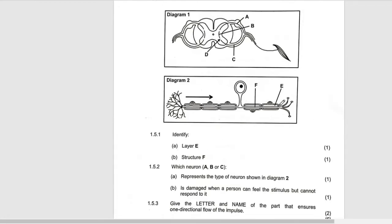Now let's start answering. Layer E—we have seen it is myelin sheath. Structure F—it is axon because this is after the cell body.